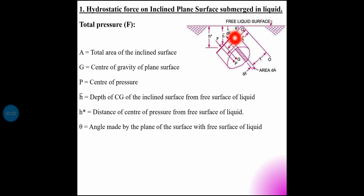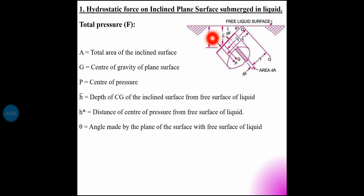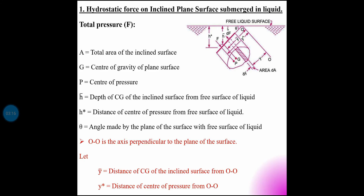H-bar is the depth of the center of gravity from the free surface. This is the point — H-star is the distance of the center of pressure from the free surface of the liquid. The total pressure force acts at a distance between the free surface and the center of pressure.